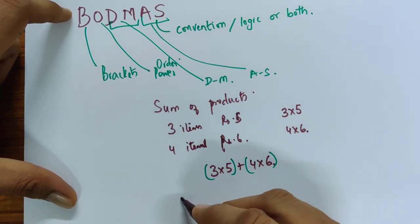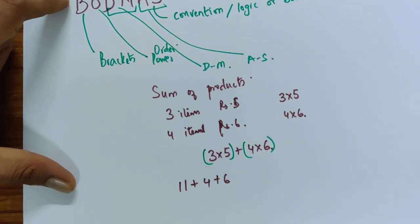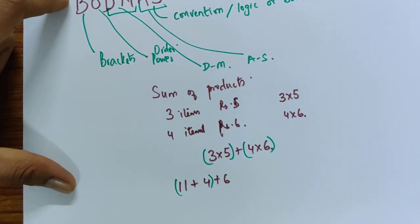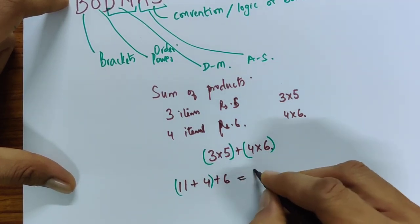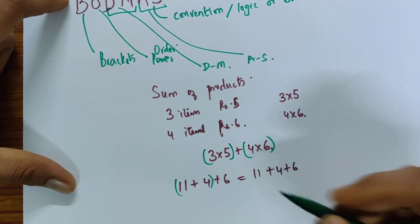For example if I did 11 plus 4 plus 6 then no matter what order in which I did it, whether I did this or I did this, the result would be the same.